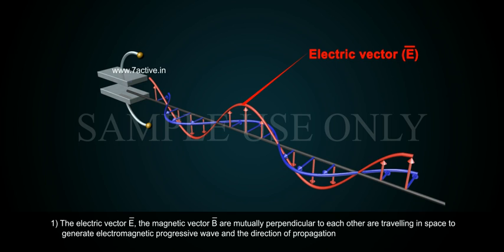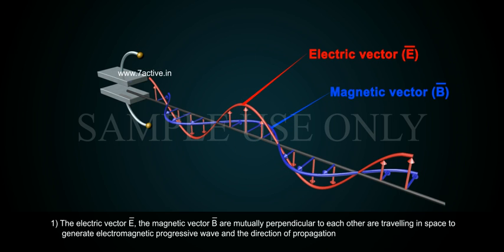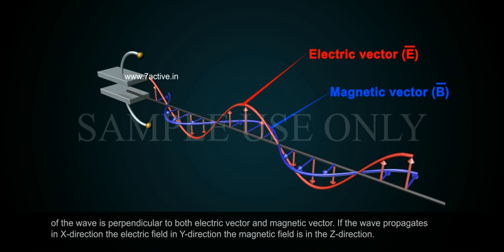1. The electric vector E and the magnetic vector B are mutually perpendicular to each other and are traveling in space to generate electromagnetic progressive wave. The direction of propagation of the wave is perpendicular to both electric vector and magnetic vector.